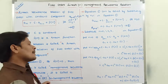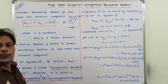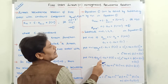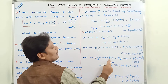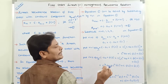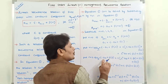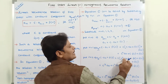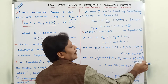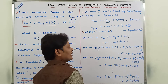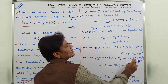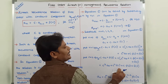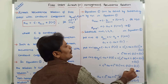Substituting n = 2 in equation 2: a_3 = c · a_2 + f(3). Substituting the value of a_2: a_3 = c · (c² · a_0 + c · f(1) + f(2)) + f(3) = c³ · a_0 + c² · f(1) + c · f(2) + f(3).